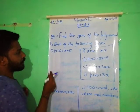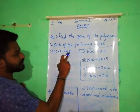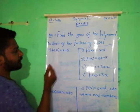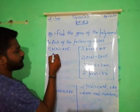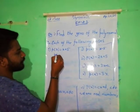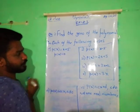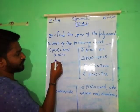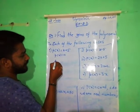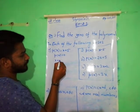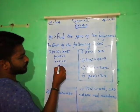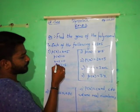First question: P of x is equal to x plus 5. By solving method, how do we find out the x value? Simply, P of x is equal to 0. What is P of x? x plus 5. So x plus 5 is equal to 0, which gives x is equal to minus 5.